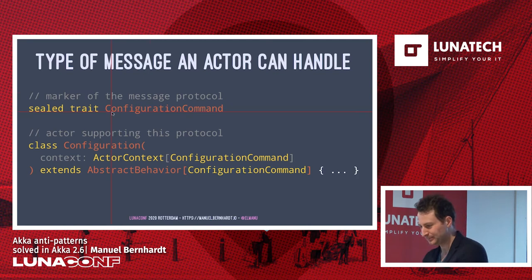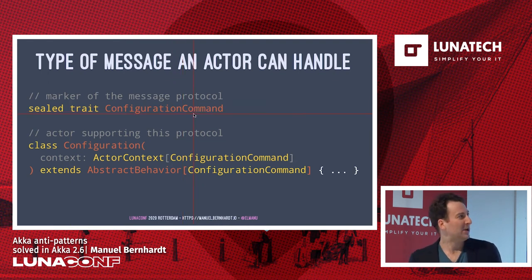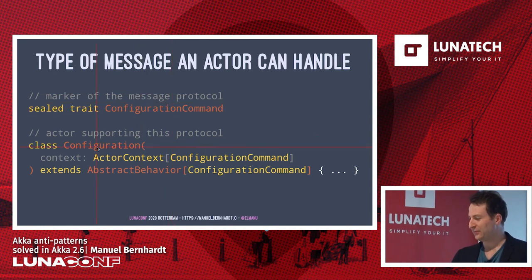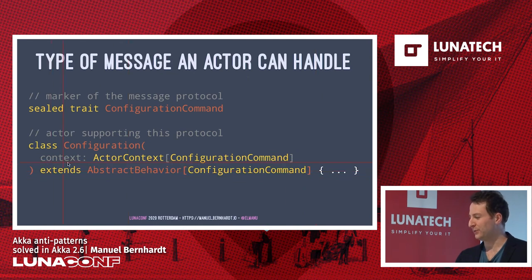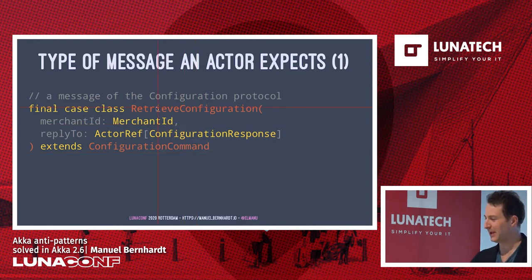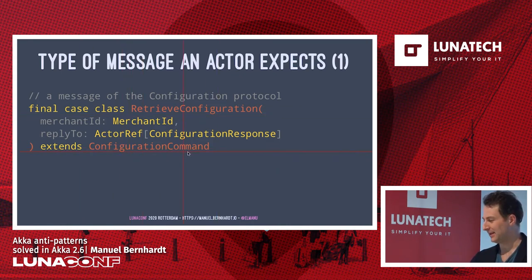At the very least you have to define a top-level message, specifying the protocol — the type of message an actor can understand — and when building messages, the type of reply they expect. For example, you'd define a sealed trait called ConfigurationCommand as a marker trait — the root protocol. Then the actor supporting this protocol extends AbstractBehavior of ConfigurationCommand, and you pass in a typed context. You have types right away.